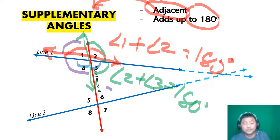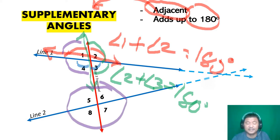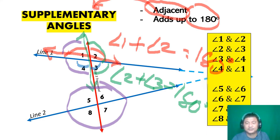Below, you will also see pairs that add up to 180 degrees. Here is the final list of supplementary angle pairs.